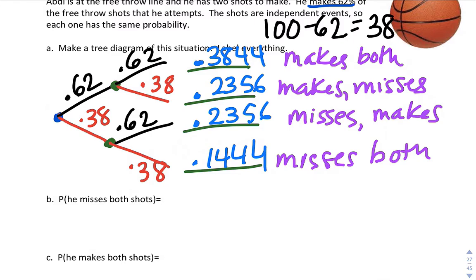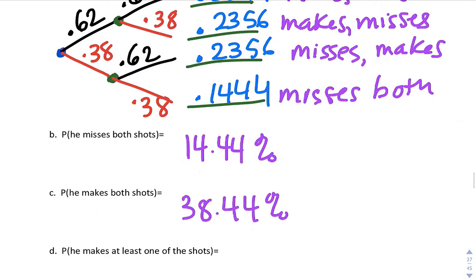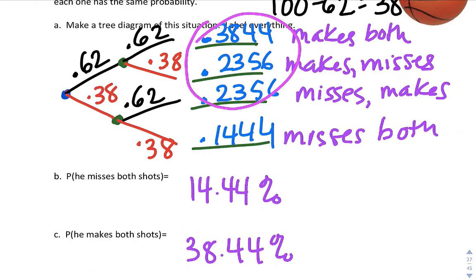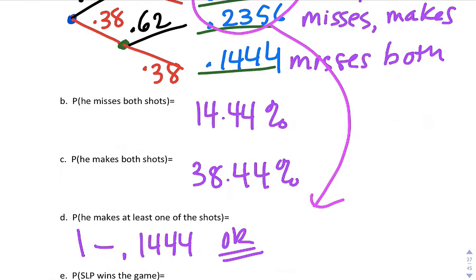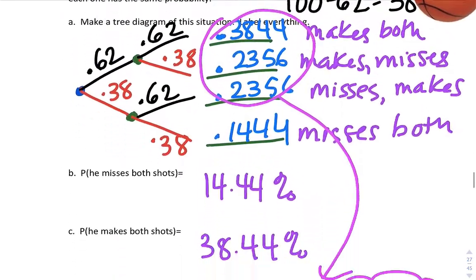Okay, so what's the probability he misses both shots? So misses both shots, 14.44%. The probability that he makes both shots, 38.44%. The probability that he makes at least one of the shots, this could be a complement. You could do 1 minus the 0.1444. Or we can add up these three right here that he makes both or makes at least one. So add them up or do the complement, 1 minus that. Either way, you should get 85.56% that he makes at least one of the shots. And that's the same probability that they win the game. Because if he makes 1 or both, they win the game. So quick review of tree diagrams and probability.